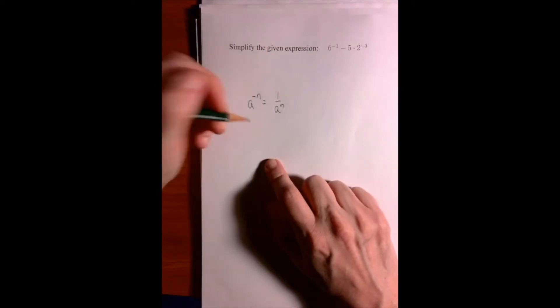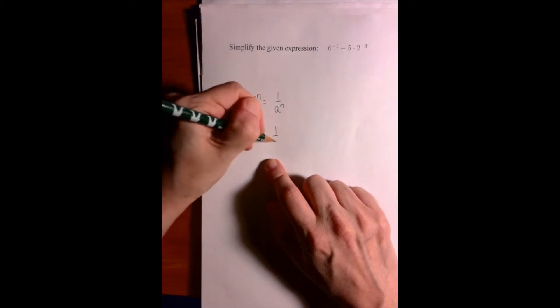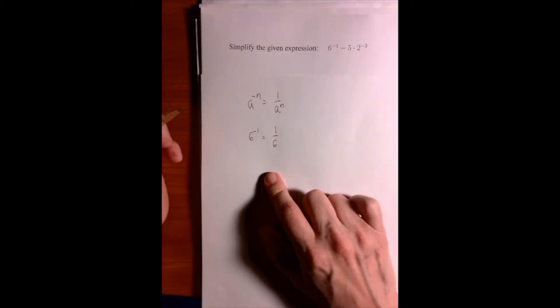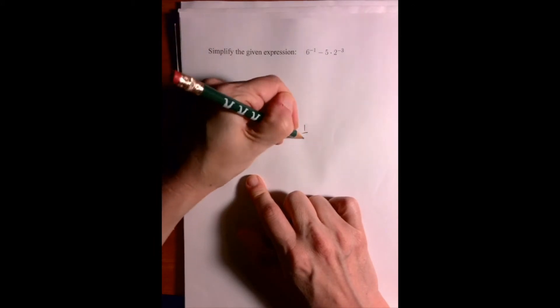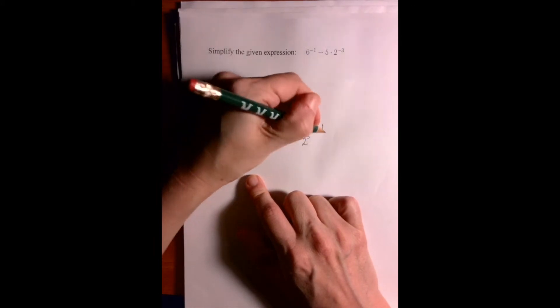Therefore, 6 to the minus 1 is the same as 1 over 6 to the 1, or 1 over 6, and 2 to the negative 3 is the same as 1 over 2 to the 3, which is 1 over 8.